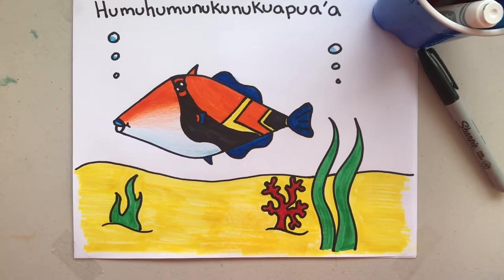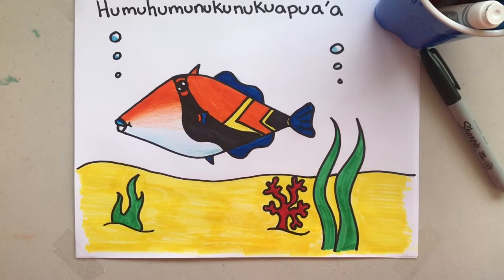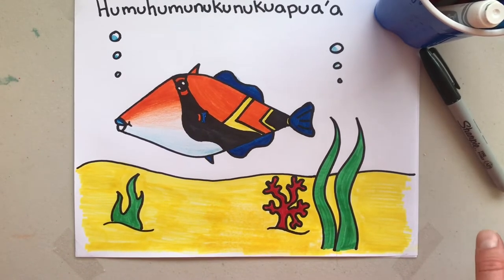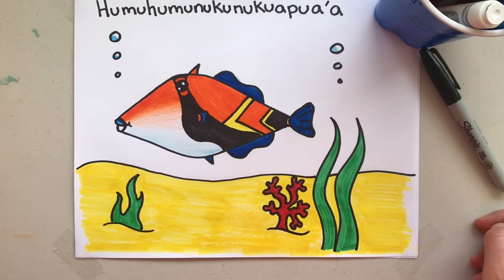Aloha! Today we are going to be drawing a Humuhumunukunukuapua'a, or sometimes just called a Humuhumu for short, and it is the state fish of Hawaii.